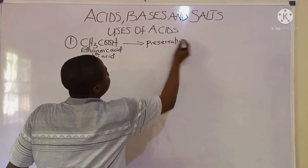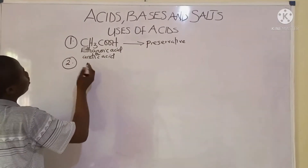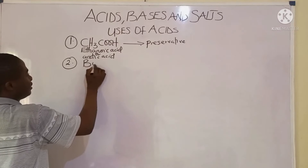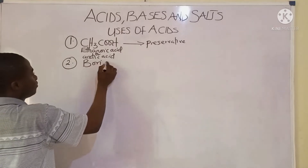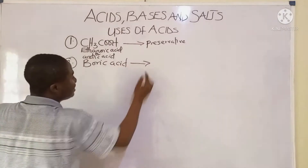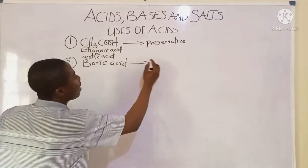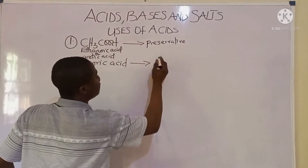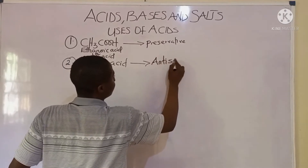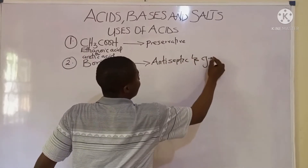Moving on to another acid — boric acid. Boric acid is basically used for making antiseptics and germicides.